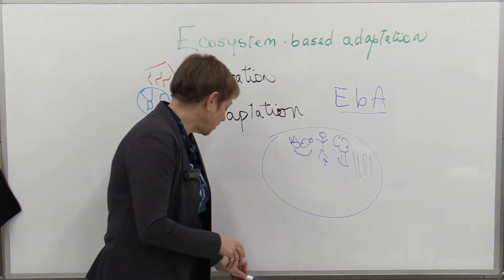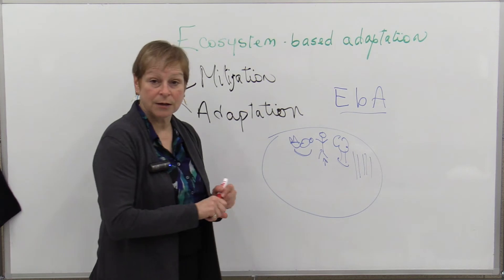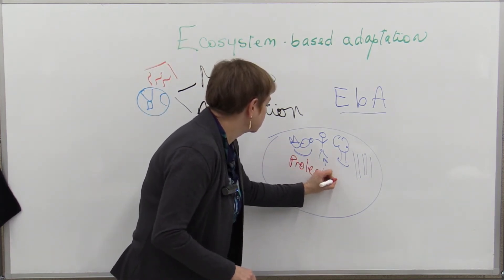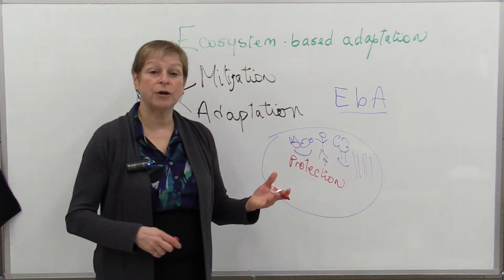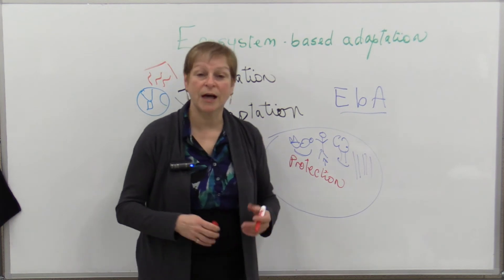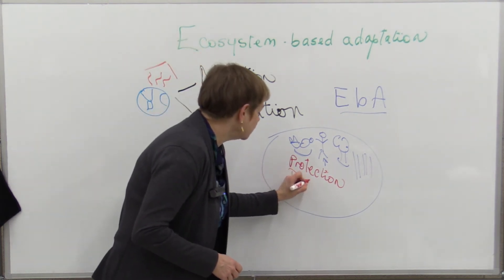How this can be done—there are many ways. It can be through protection. So protection of areas that can gradually adapt, especially in terms of the natural environment. It may be in terms of restoration.